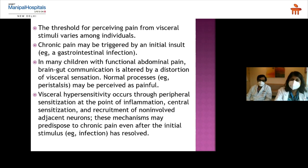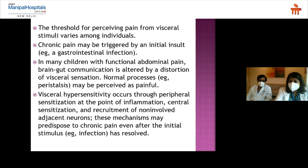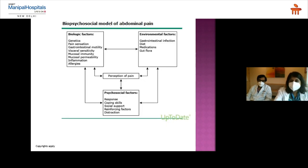The threshold for perceiving visceral pain varies among individuals, which results in chronic pain that can be triggered by an initial insult. In a child with functional abdominal pain, brain-gut communication is altered by a distortion in visceral sensation — for example, normal peristalsis may be perceived as painful. Visceral hypersensitivity can occur through peripheral sensitization at the point of inflammation, and central sensitization or recruitment of adjacent neurons may also predispose to chronic pain even after the initial stimulus resolves.